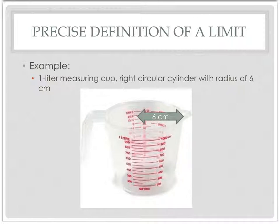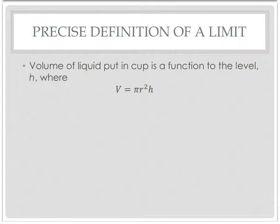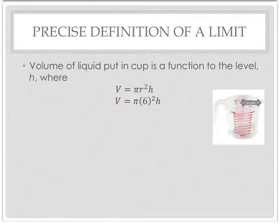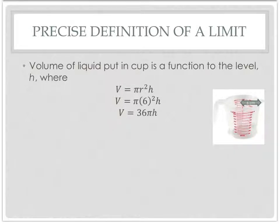What we're going to do is go through an example with a one-liter measuring cup, a right circular cylinder with a radius of six centimeters. The volume of the liquid put in the cup is a function of the level of the height of the liquid. So this is my formula: volume equals pi times the radius squared times h. The radius was six, so now I have my function.